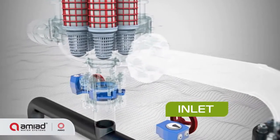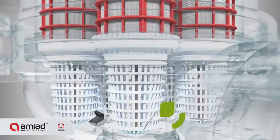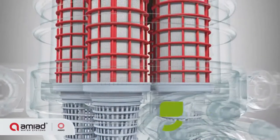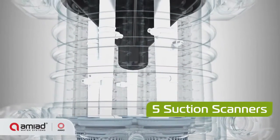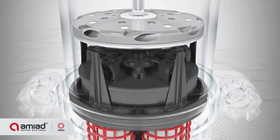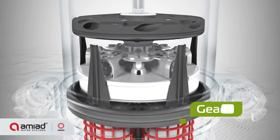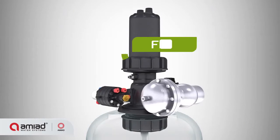Sigma is comprised of a filter vessel with inlet, outlet, coarse screens, fine screens, suction scanners, hydraulic turbine, a gearbox, and a flushing valve.